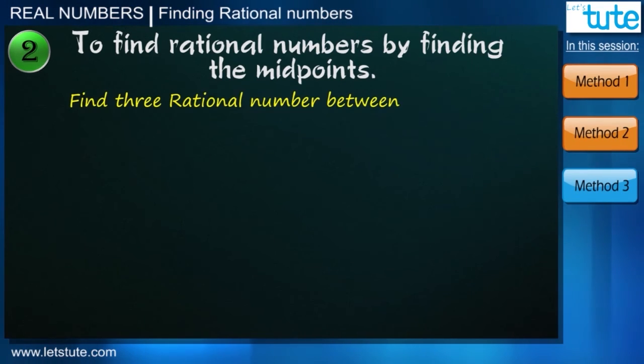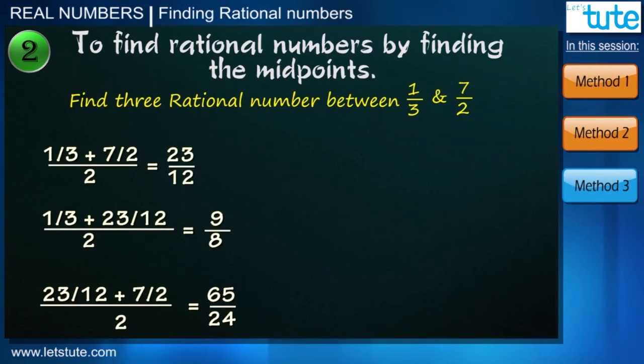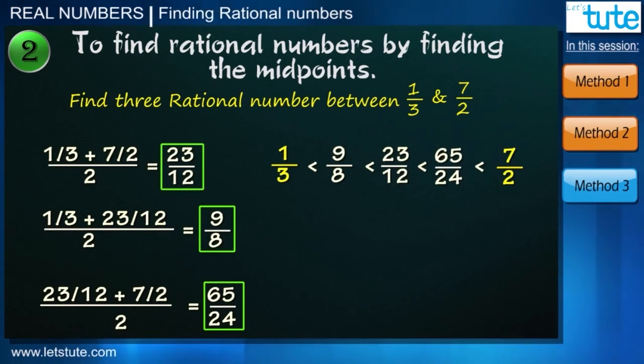Let's now say we want to find the three rational numbers between the fractions 1 by 3 and 7 by 2. So similarly even here we can just go on finding the midpoints which will give us three rational numbers between 1 by 3 and 7 by 2.